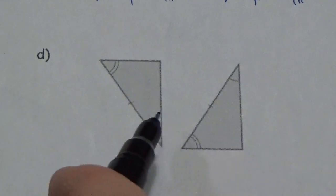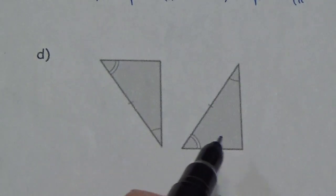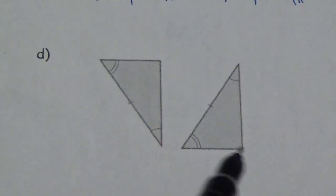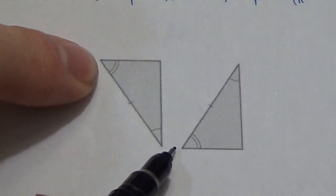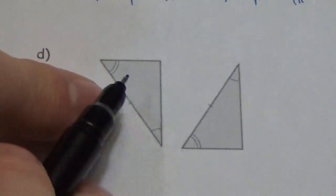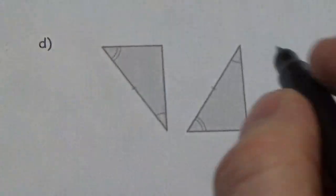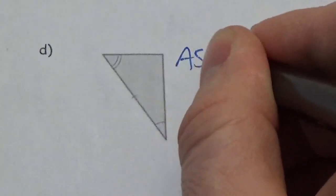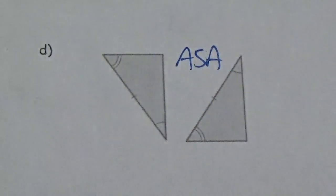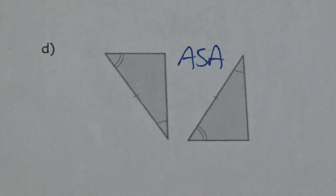And in the fourth pair, we've got angle, side, and angle — so this is another angle-side-angle congruency.